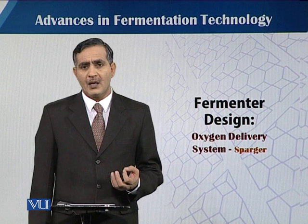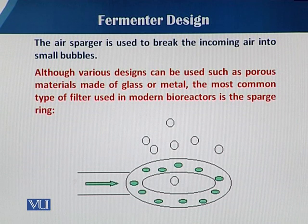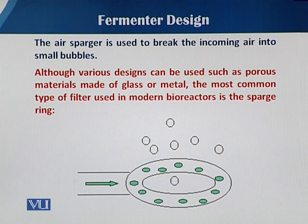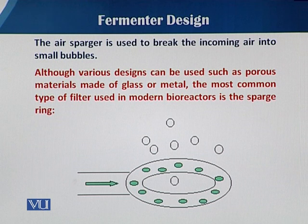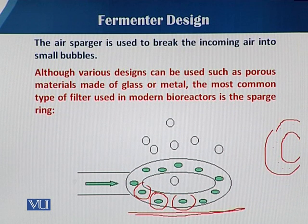What is a sparger and what is its role in the oxygen delivery system? The air sparger is used to break the incoming air into small bubbles. When a stream of air comes through the compressor and then enters through the air sterilization system and then enters into the fermentation medium, there are small pores or slits — they may be round or they may be slits — so there are different designs and shapes of spargers.